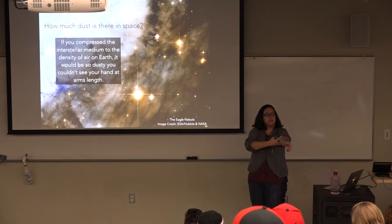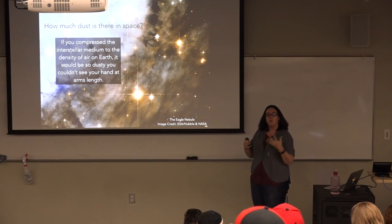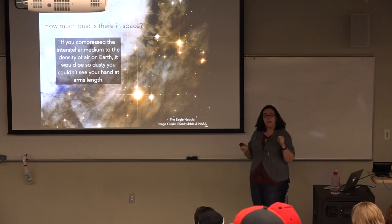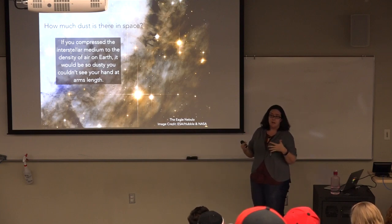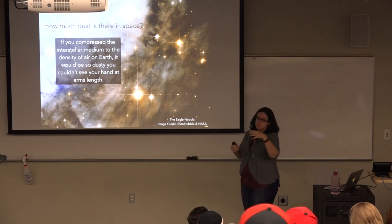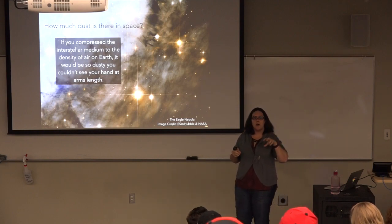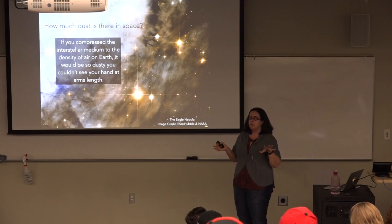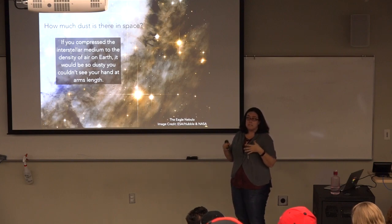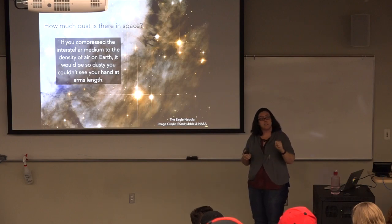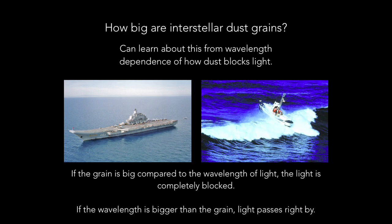The other thing I want to explain is how we know what size dust grains are. This is closely tied to the observation that things we see behind clouds of dust look redder in the visible part of the spectrum than they would otherwise. Think about the last time you saw a really smoky day and looked at the sun — it looks redder than normal. That is the exact same process. The reddening of light actually tells us about the size of the grains.